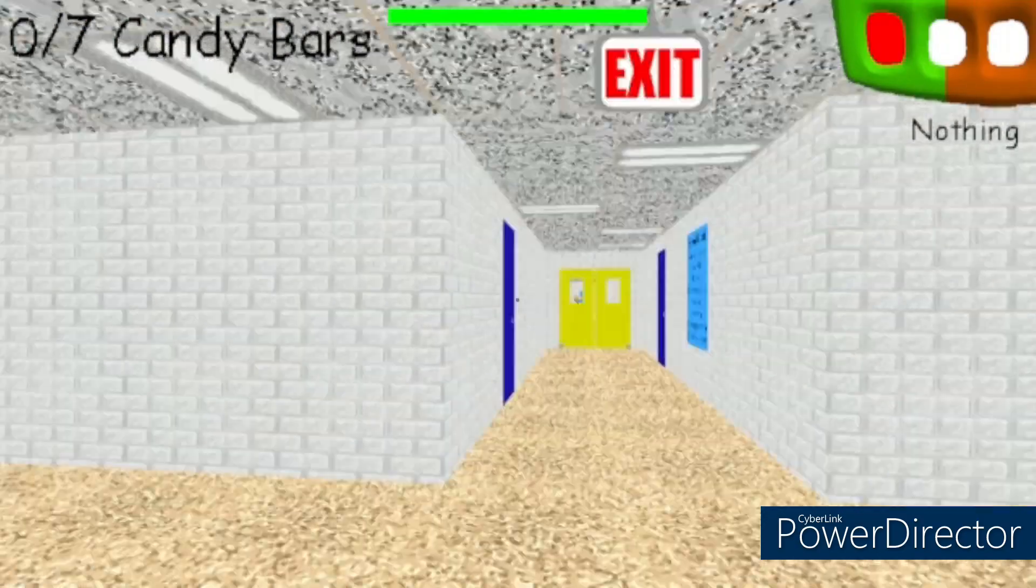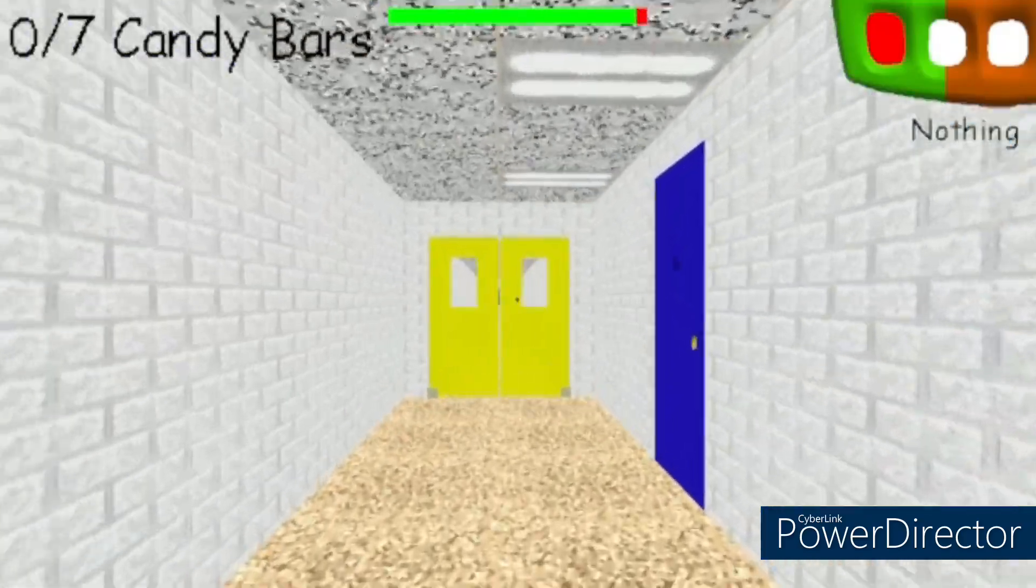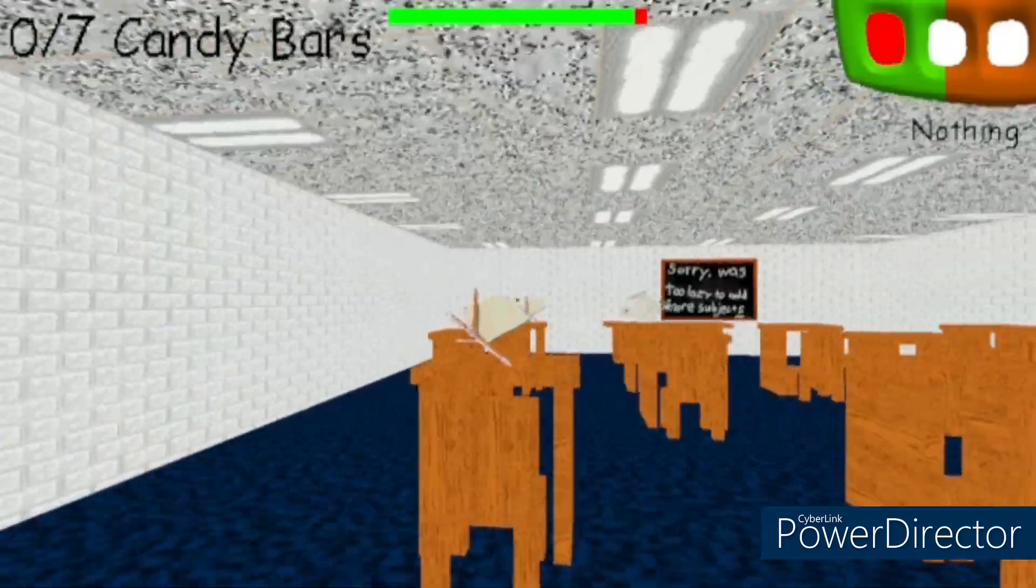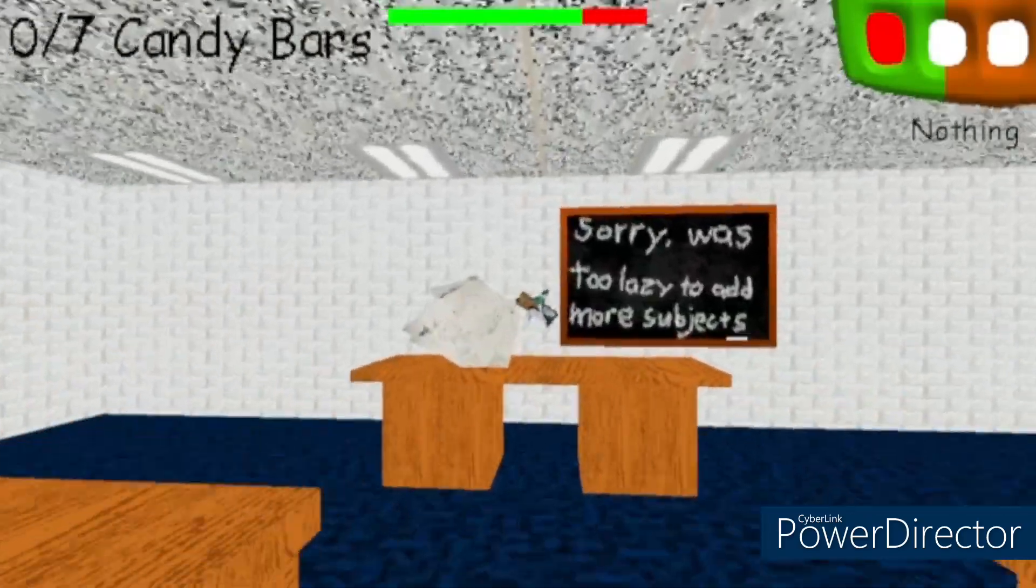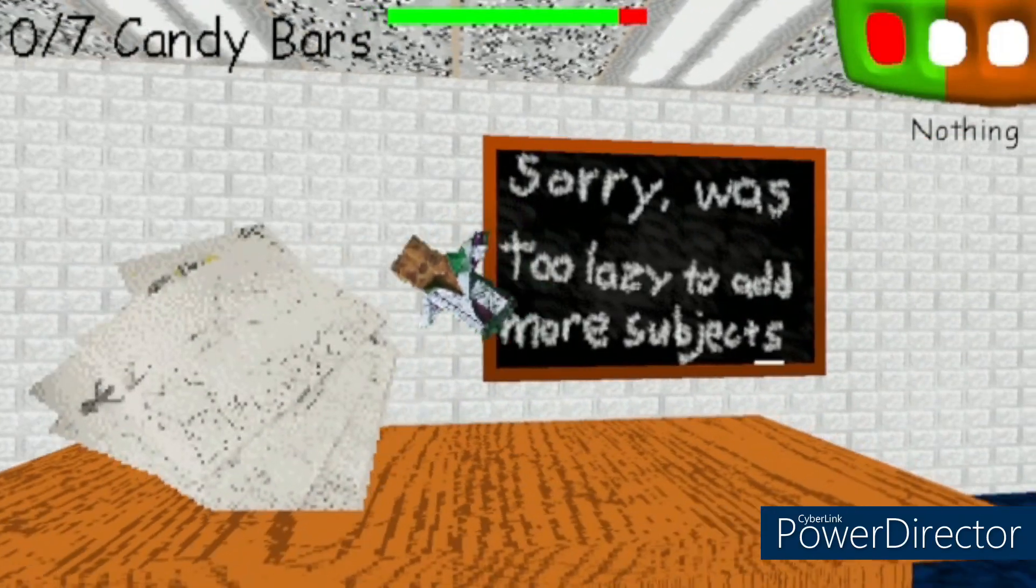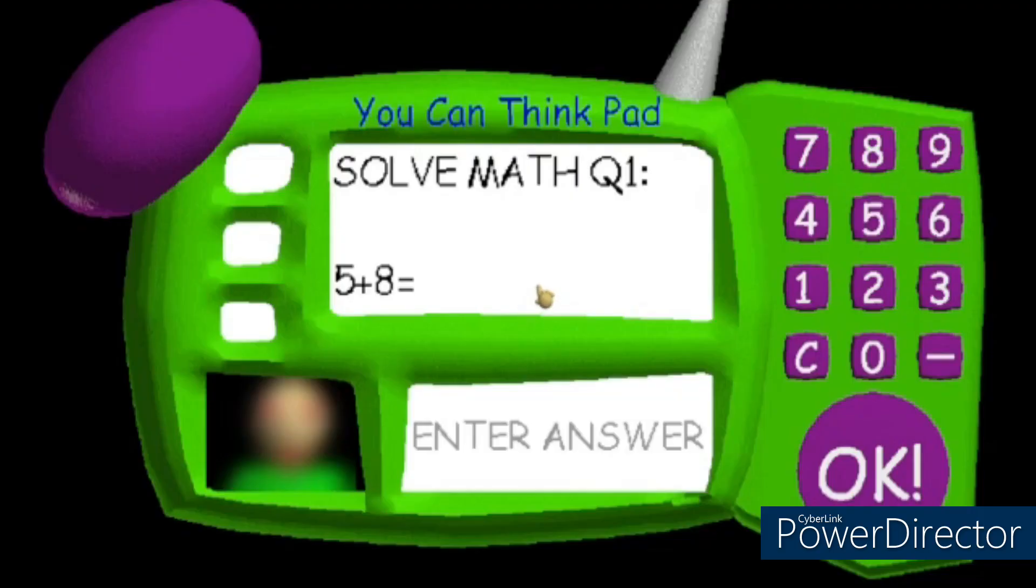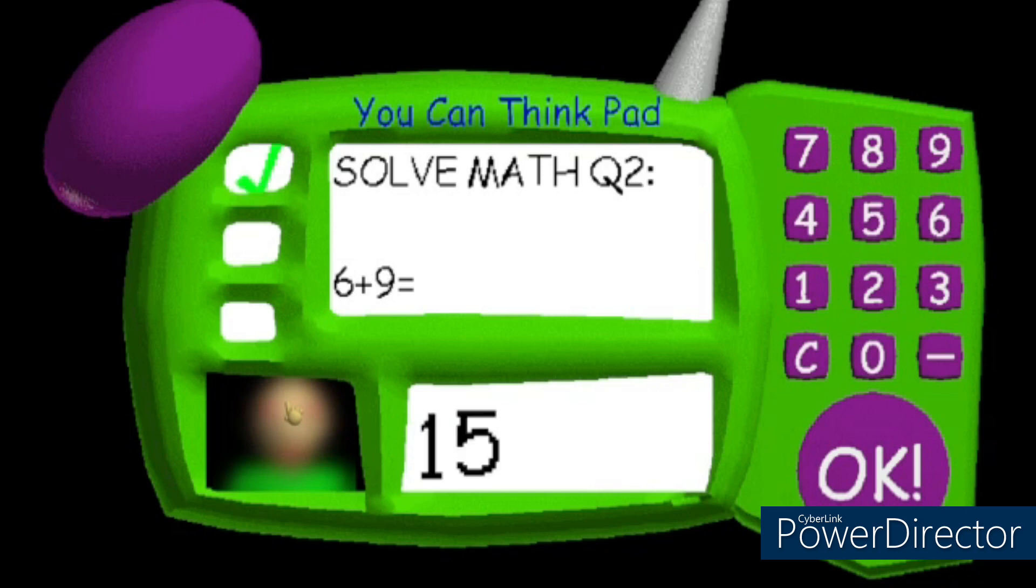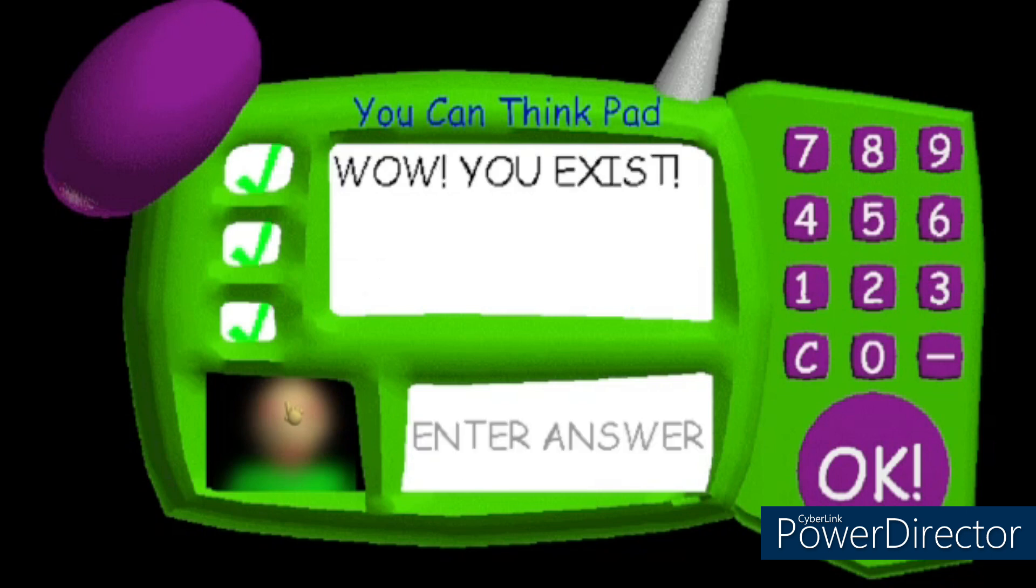All right guys, I have fixed the sensitivity so let's get the first candy bar. Why are Baldy's eyes red? It's blurry but I think you guys can't see because there's red in Baldy's eyes. Five plus eight is 13, six plus nine is 15, and this is 10. Why do you exist?